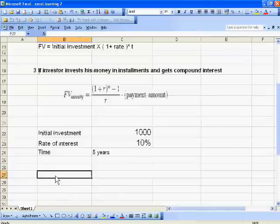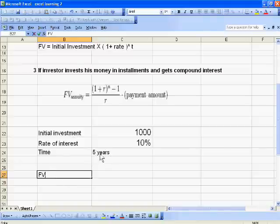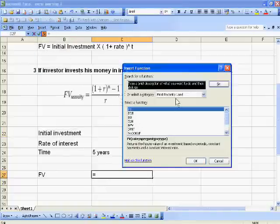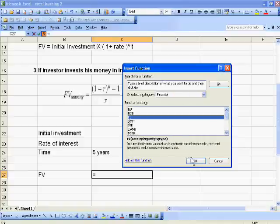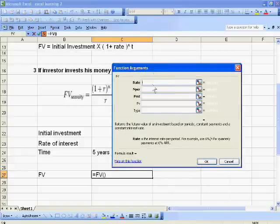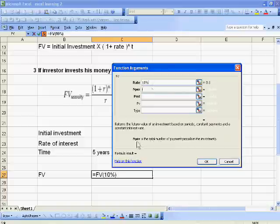Now let's calculate the future value after five years. Go to insert function and select financial FV. Rate is 10%. NPER is the total number of payment periods in the investment.